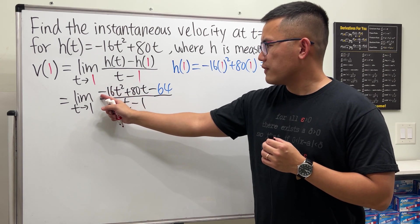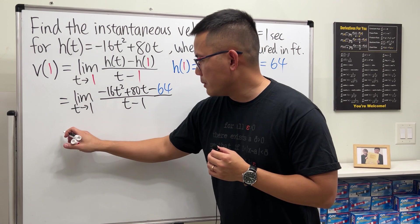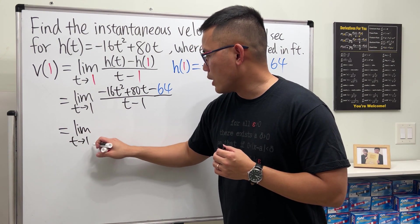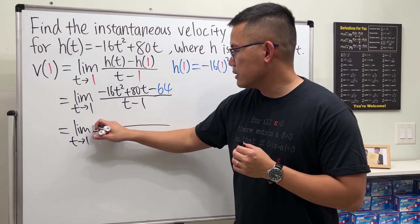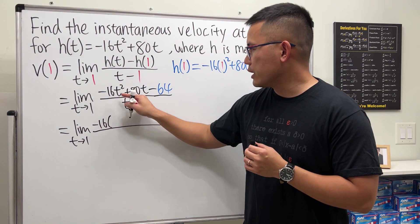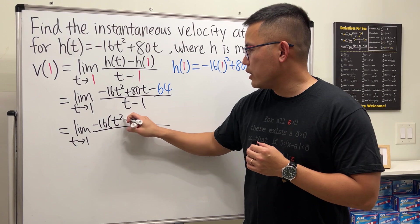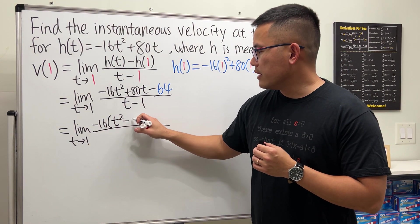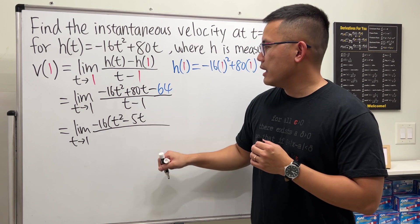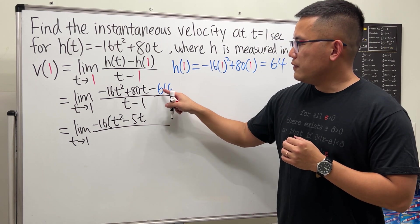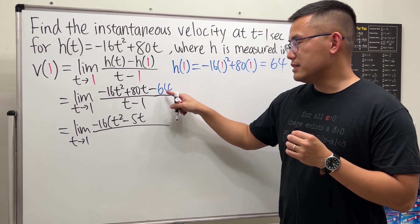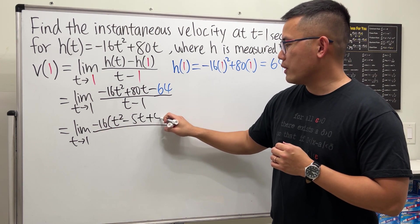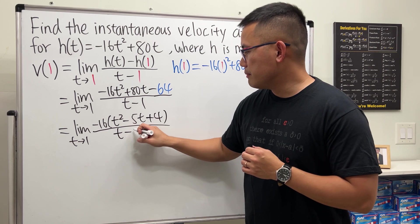On the top, let's factor things out. Let's first factor out the negative 16. That will be pretty helpful. So we are looking at the limit as t goes to 1. First, take out the negative 16. And then we will get positive t squared. And then 80 divided by negative 16. That will give us negative 5t. And then negative 64 divided by 16. That will give us positive 4. And then we have that t minus 1.